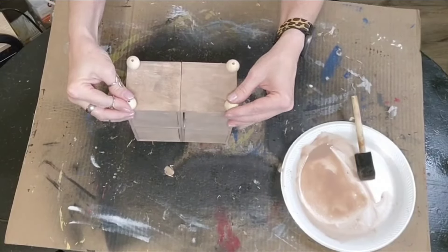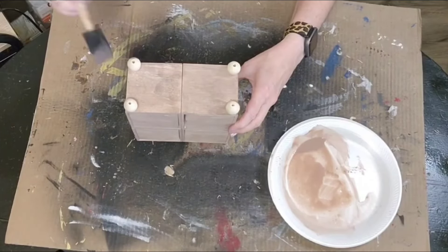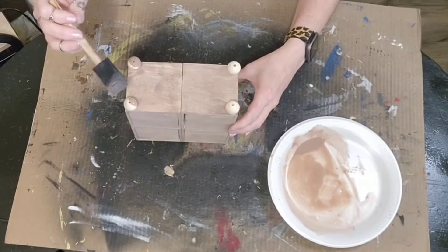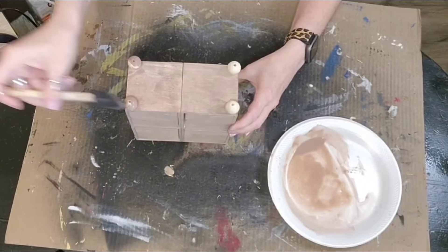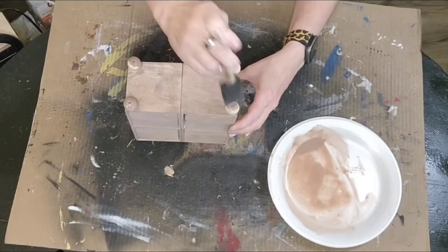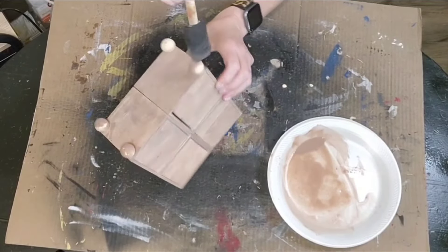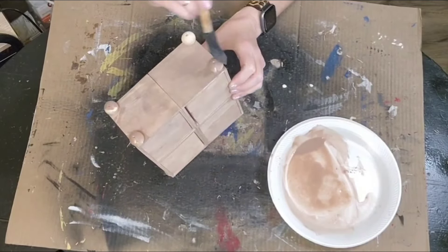I glued the wood beads to each corner of the bottom using the wood hot glue, and then I just dabbed my paint mixture over the top. So this would look kind of like a little bureau with cute little legs.